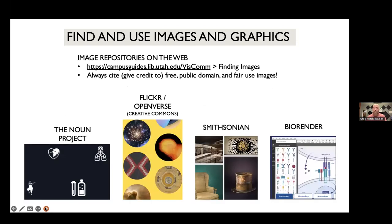There are also places on the open web to find good content. I have a number of them linked from my visual communication guide — go to the tab called 'Finding Images.' No matter where you find something — through Google Images or recommended resources — you must always give credit with a link to the URL so others can find it and you don't claim it as your own. The Noun Project is great for iconography: icons available in black and white that you can recolor inside PowerPoint. BioRender also offers colorful icons you can create with its drag-and-drop tool.